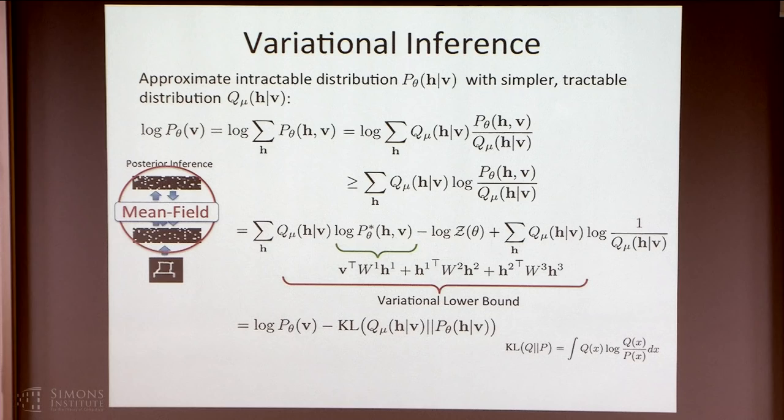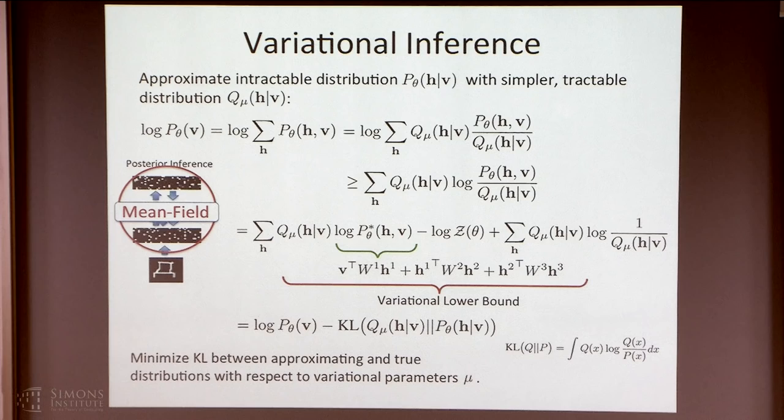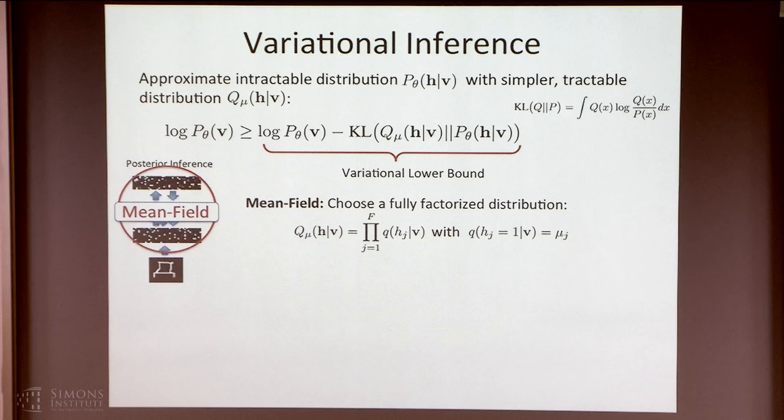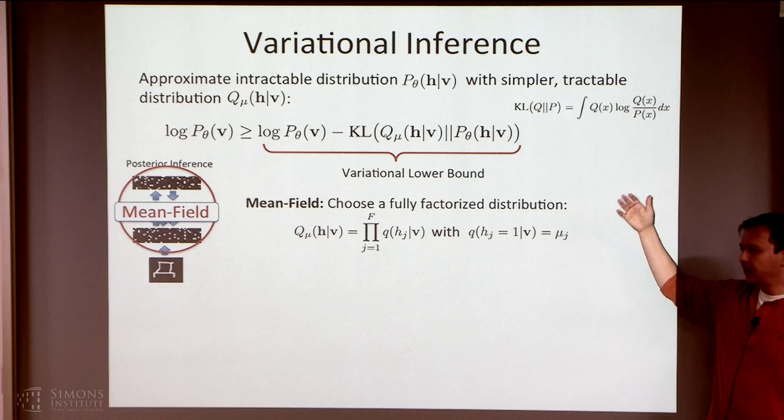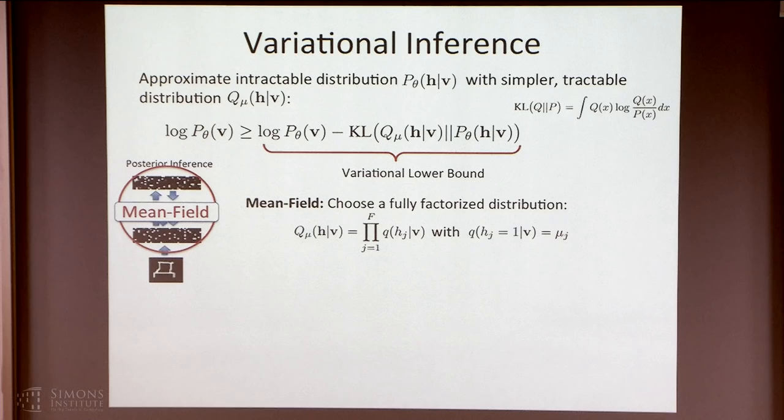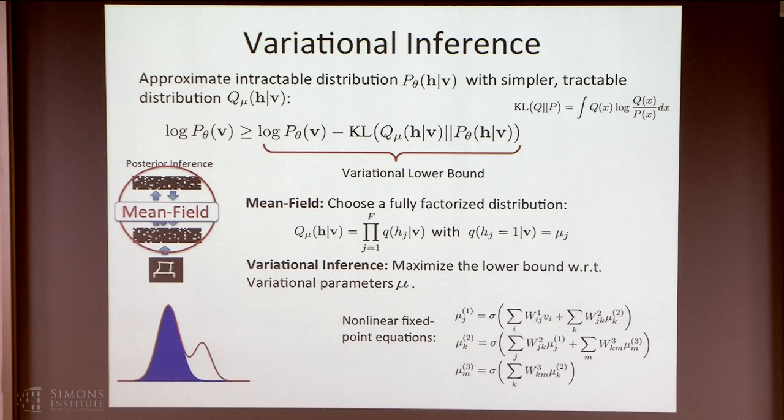You can also write this variational bound as log probability of data minus KL divergence between Q and P. You're trying to optimize parameters mu such that the KL divergence between the two distributions is as small as possible — if it's zero, you get a tight bound. If you choose Q to be a fully factorized distribution, you're essentially breaking all the links in the model. Plugging this in, it comes down to a sequence of nonlinear equations that look like Gibbs updates.